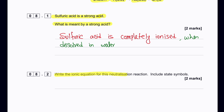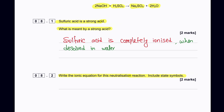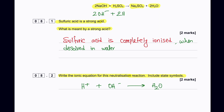Write the ionic equation for this neutralization reaction, including state symbols. The neutralization ionic equation is: H⁺(aq) + OH⁻(aq) → H₂O(l). Because we have two sodium hydroxide molecules, we balance to: 2H⁺(aq) + 2OH⁻(aq) → 2H₂O(l). H⁺ is aqueous, OH⁻ is aqueous, and the resulting water produced is liquid.